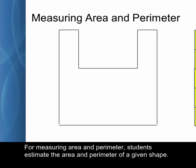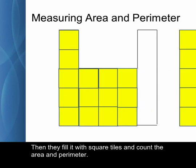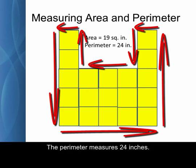For measuring area and perimeter, students estimate the area and perimeter of a given shape. Then they fill it with square tiles and count the area and perimeter. To cover this shape takes 19 tiles, so its area is 19 square inches. The perimeter measures 24 inches.